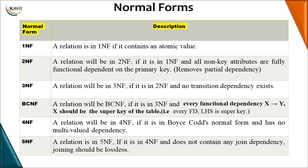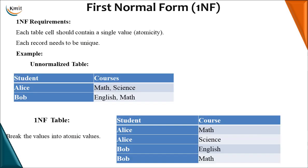4NF is beyond BCNF — a table should be in BCNF and should not have multivalued dependencies. 5NF deals with join dependencies, meaning it will not have any lossy joins — only lossless joins. Let us try to see these normal forms one by one.